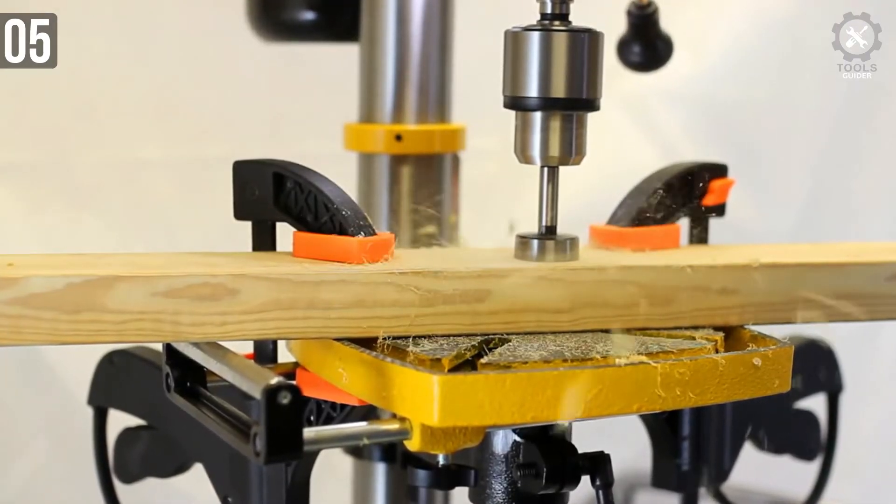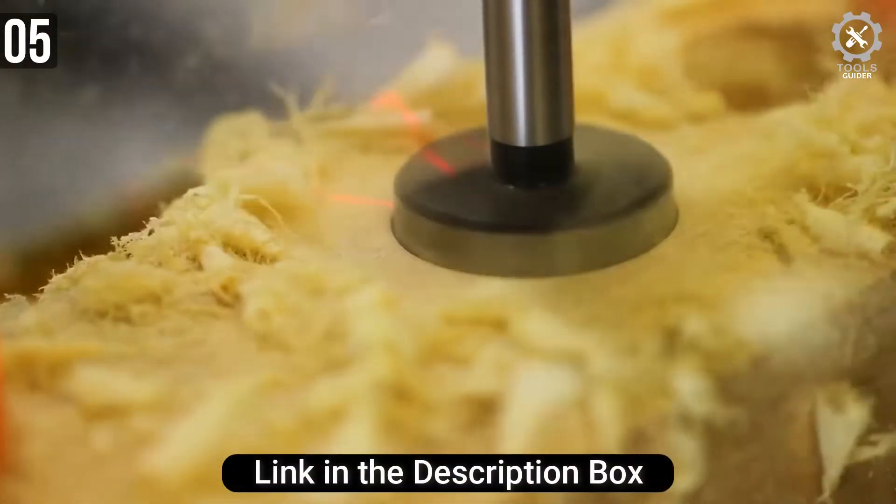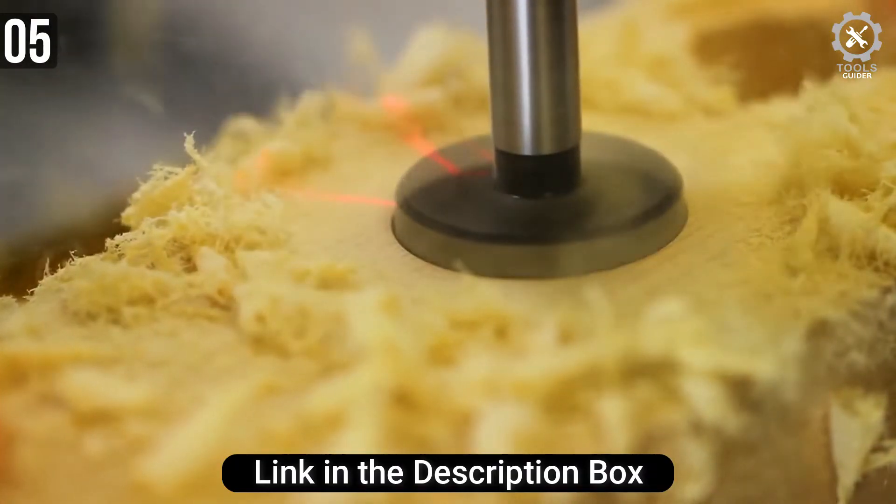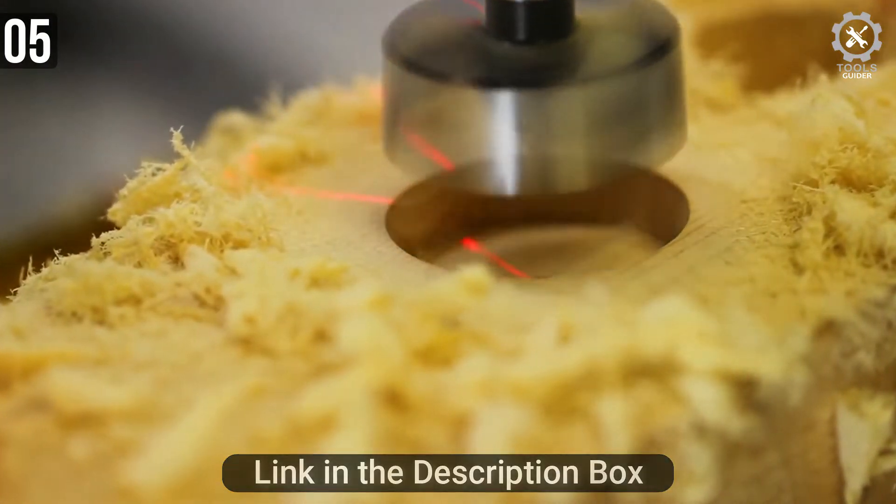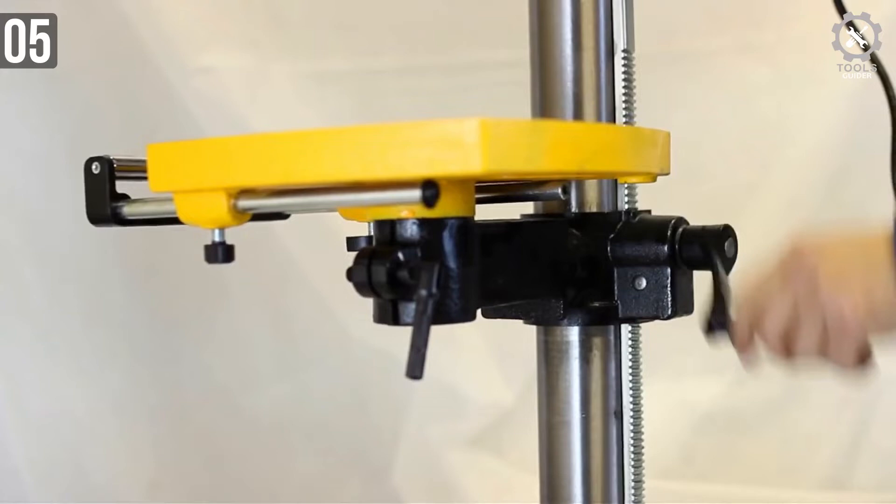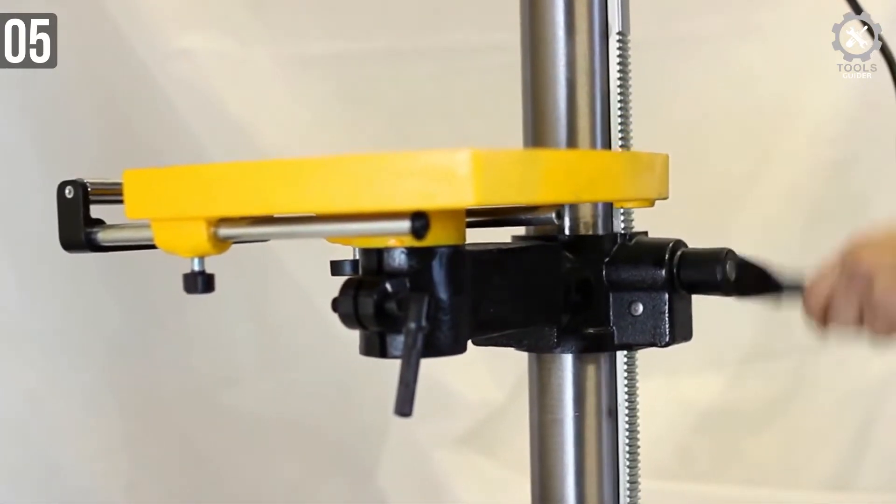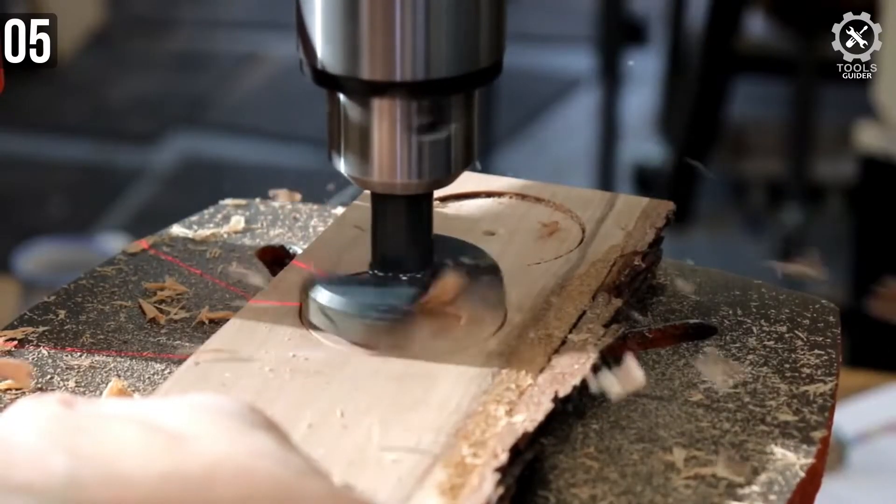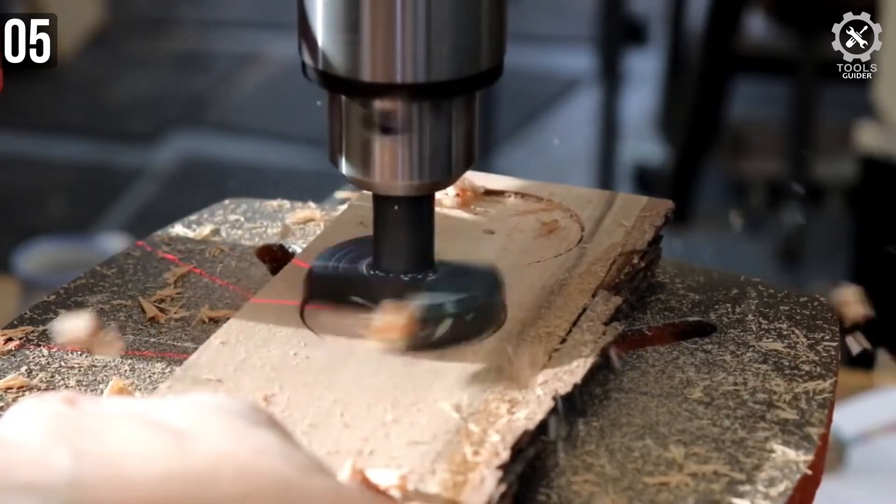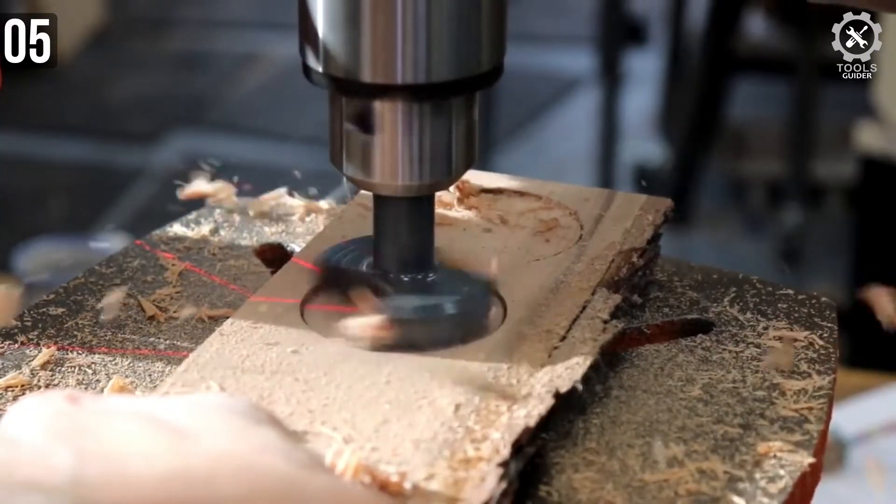This press is powered by a 2/3 HP motor rated at 120V 60Hz at 5 amps. As mentioned, it won't have as much torque as a larger model, but it will definitely get the job done.